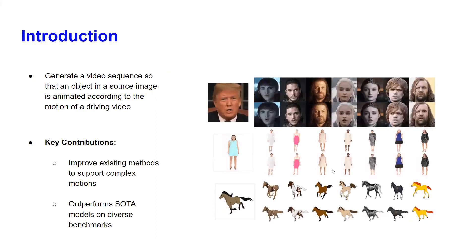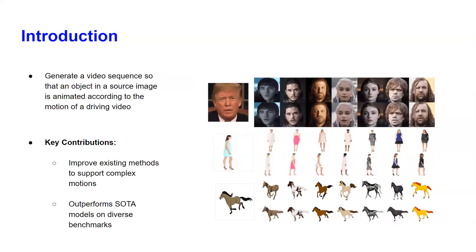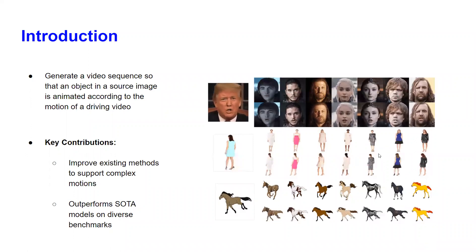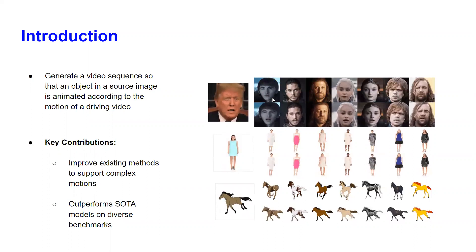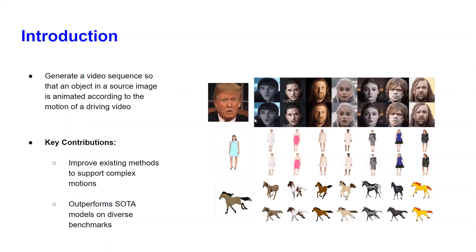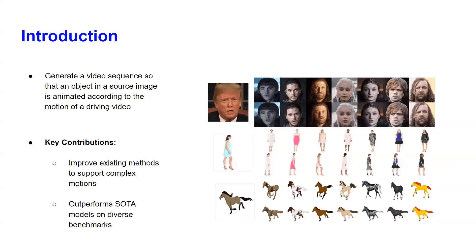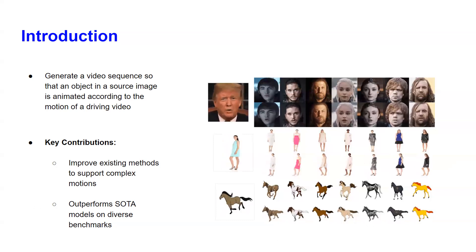The main idea of this paper is to approach the task of generating a video sequence so that an object in a source image is animated according to the motion of a driving video. As we have a driving video and a source image, we can apply them in such a way that the source image will animate itself using the motions from the driving video. The key contributions are: improve existing methods to support complex motions and outperform state-of-the-art models on diverse benchmarks.